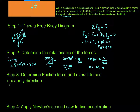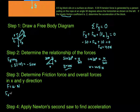A handy mnemonic: just remember FUN — the Force of friction equals the kinetic friction coefficient times the Normal force. The normal force is 40 Newtons and the kinetic friction coefficient is 0.2. So the force of friction equals 0.2 times 40, which gives us a force of friction equal to 8 Newtons.